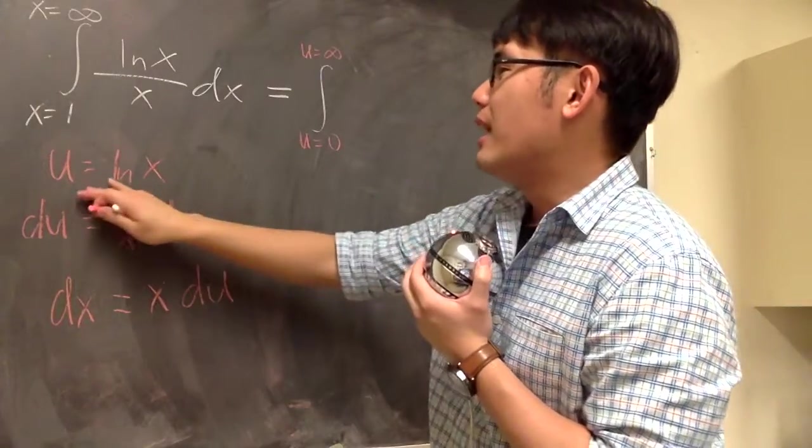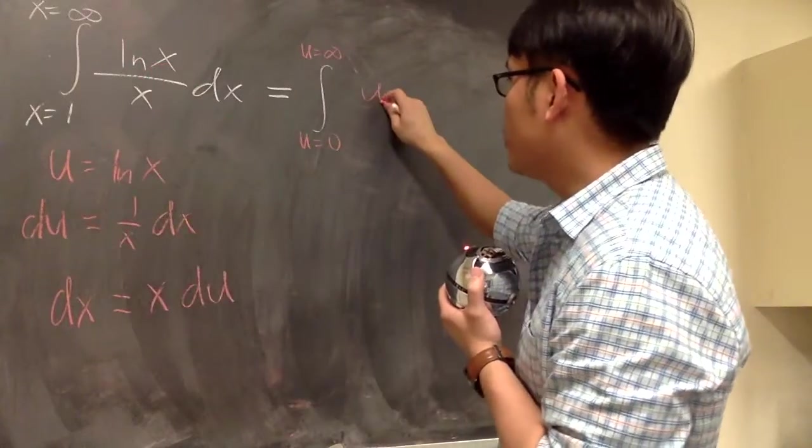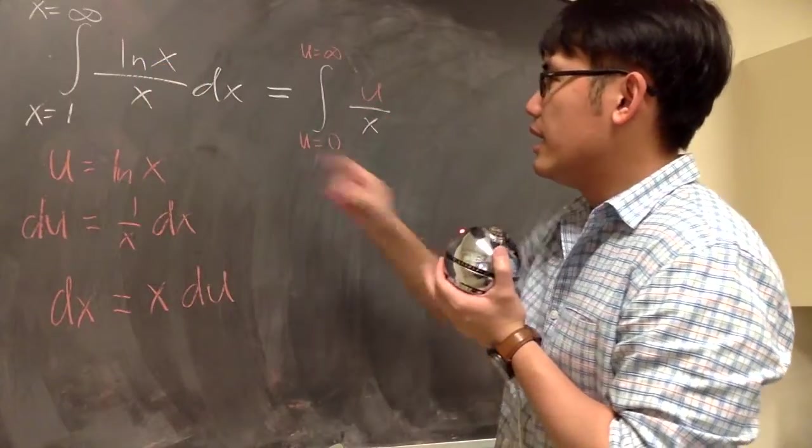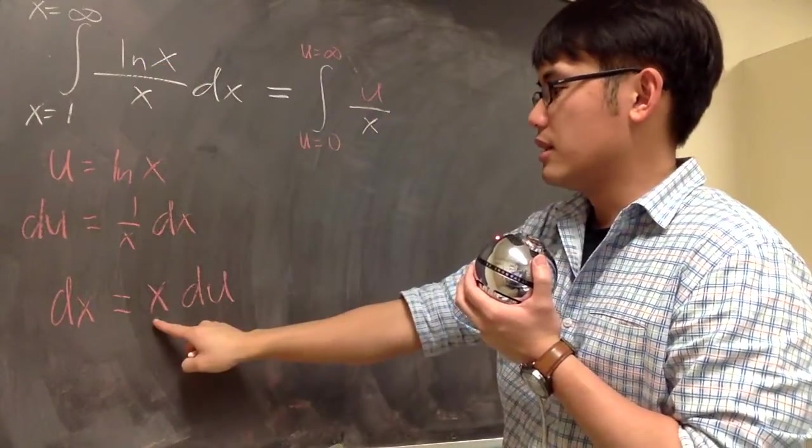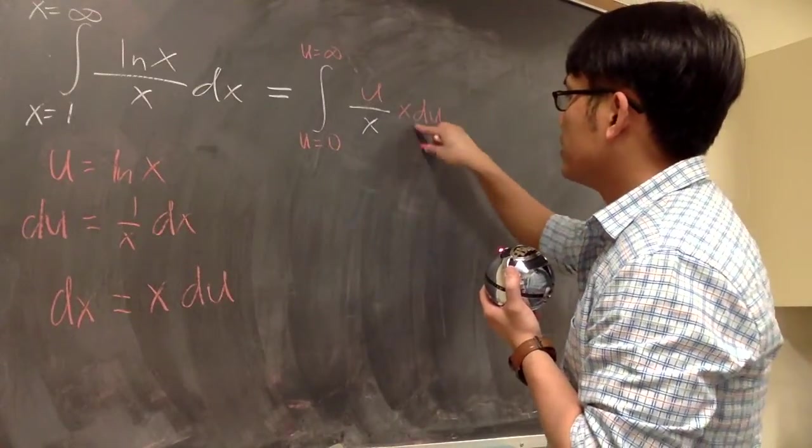Let's see. On the top, ln x is what we set to be u. So we have u on the top, and then we have that over x. And then dx is the same as x times du. So we have x times du for dx.